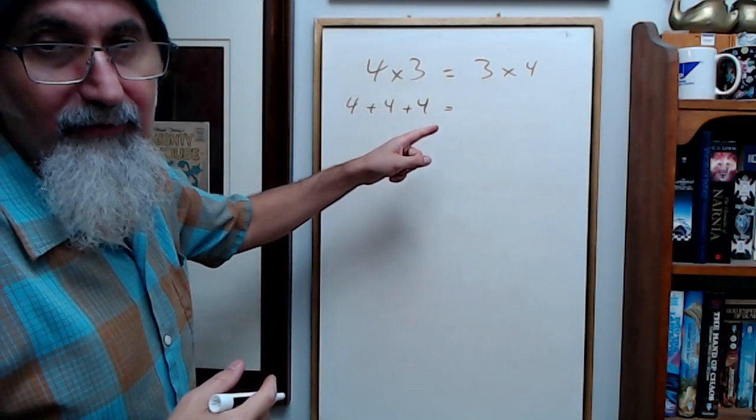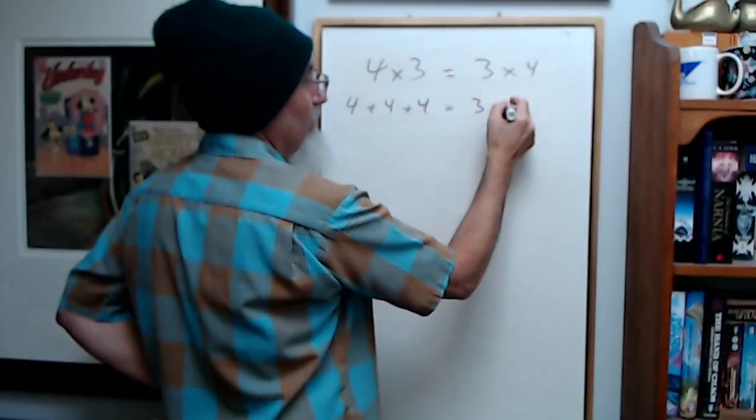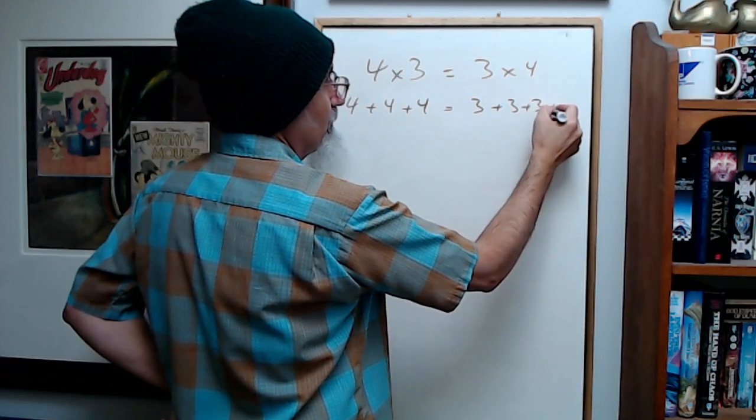3 times 4 is really 3 plus 3 plus 3 plus 3.